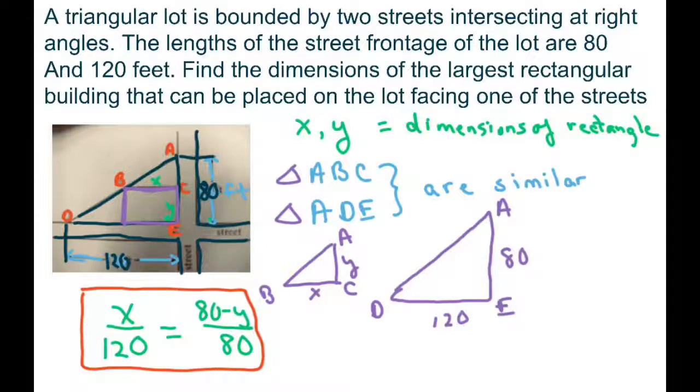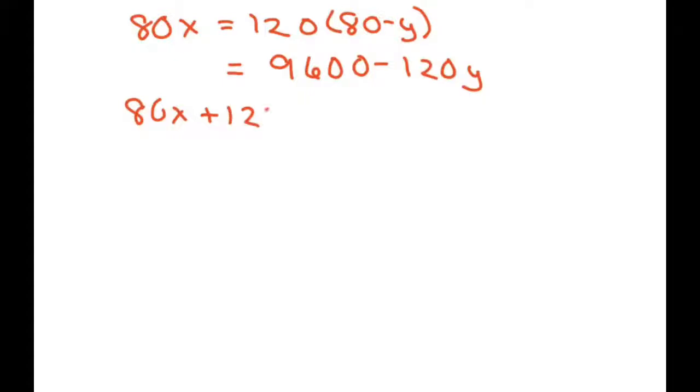You're going to cross multiply and solve. So basically we're going to get 80X equals 120 times 80 minus Y, and that equals 9600 minus 120Y. Move the Y over, so I get 80X plus 120Y equals 9600. I can reduce all of this by 40, so 2X plus 3Y equals 240.